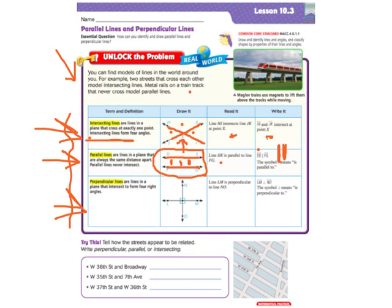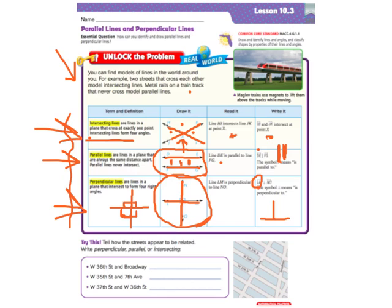Perpendicular lines are lines in a plane that intersect to form four right angles. That means they go exactly up and exactly across, so you have 90 degrees here, here, here, and here — four right angles. This picture of perpendicular lines, you would read it: line LM is perpendicular to line NO. And you would write it using the perpendicular sign, which is like an upside-down T: LM is perpendicular to line NO.